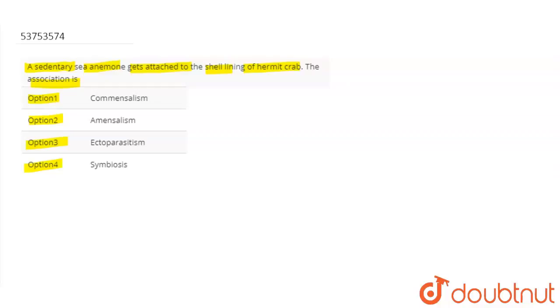If we talk about commensalism, one organism has benefits while another one is neutral. If we talk about the second option, amensalism, one organism has effect while another organism is neutral.